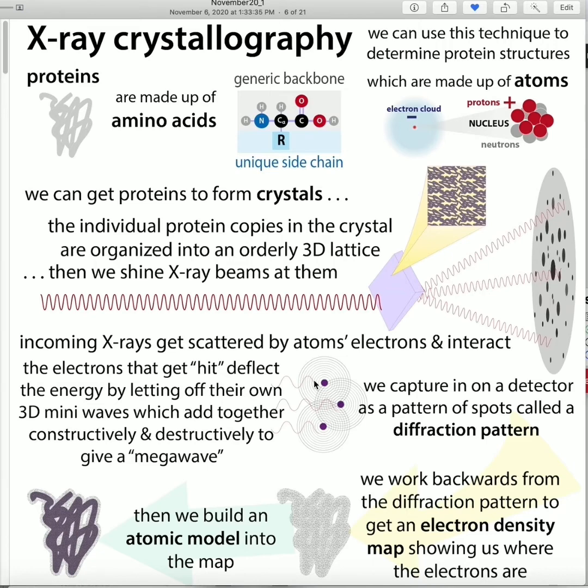When the waves get scattered, they run into one another and you get constructive and destructive interference. Constructive interference is where the waves add together, and destructive interference is where they cancel out. In a crystal, because of the repeating pattern, the signal cancels out almost everywhere except at specific points. Those points of constructive interference hit a detector and you get a series of spots called the diffraction pattern.